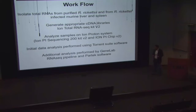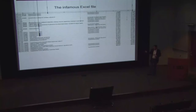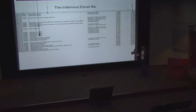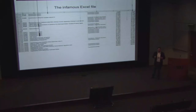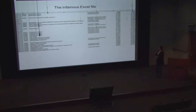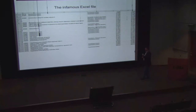The initial data analysis was performed using Torrent Suite software, and additional analysis was performed by GeneLab and CCT using the RAC pipeline and Partek software. As Jim alluded to yesterday, this is the infamous Excel file — what you get back after all this experimentation and analysis. You get all sorts of diagrams and quality control data, but also a more user-friendly Excel file. What I want you to appreciate here is that these are some of the genes most highly upregulated in both the liver and the spleen in comparison to the transcriptional profile of Rickettsia isolated from in vitro cell culture.